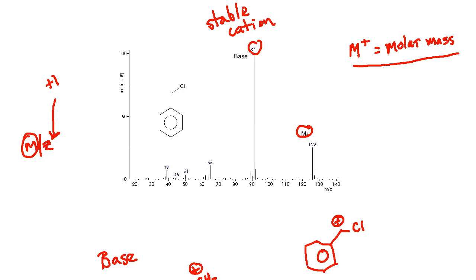That is the result of the base peak and the relative intensity. We say this is 100, the base peak, and everything else is in comparison to it. That tells us about the relative stability of some of the other cations that we might find.